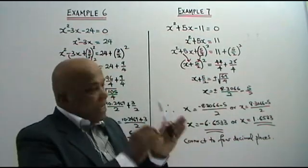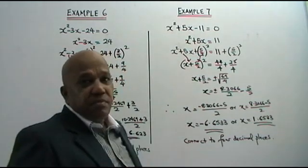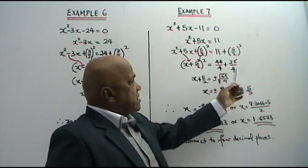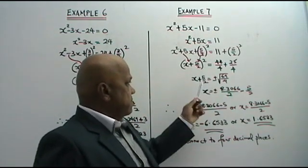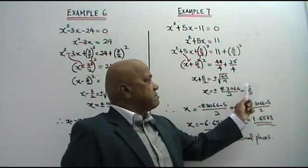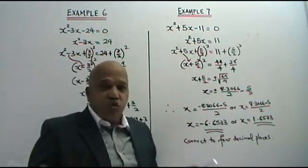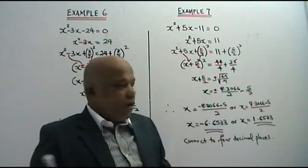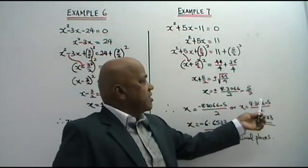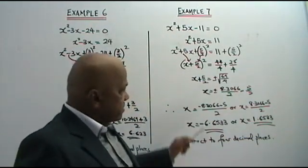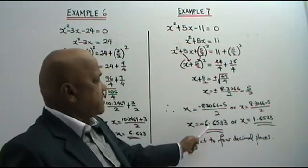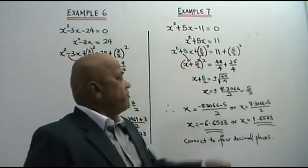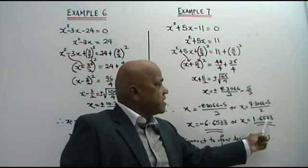So x plus 5 over 2 equals to square root, plus or minus, of 69 over 4 — that is 8.3066 over 2, since square root of 4 is 2. Bring plus 5 over 2 to the other side: minus 5 over 2. Therefore, x has got two values: x equals negative 8.3066 minus 5 over 2, or x equals 8.3066 minus 5 over 2. So from here, x equals negative 6.6533, or from here x equals 1.6533, correct to 4 decimal places.